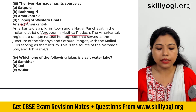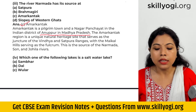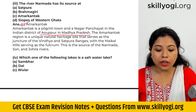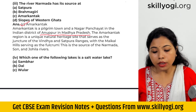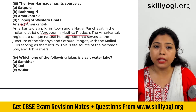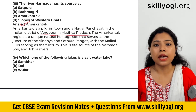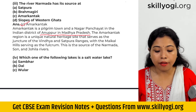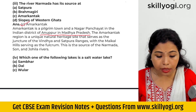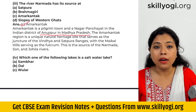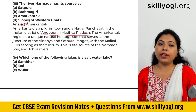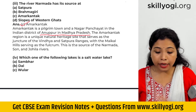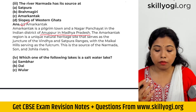The Amarkantak region is a unique natural heritage site that serves as the juncture of the Vindhya and Satpura ranges, with the Maikal hills serving as the fulcrum. This is the source of the Narmada, Son, and Johila rivers.